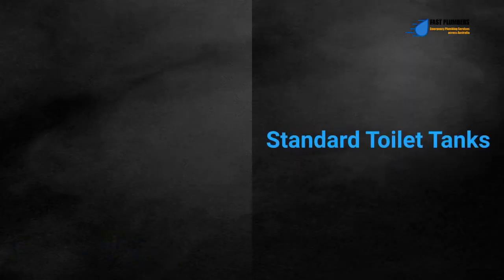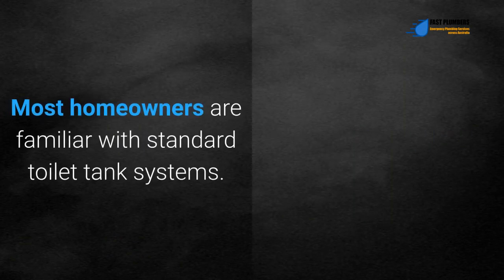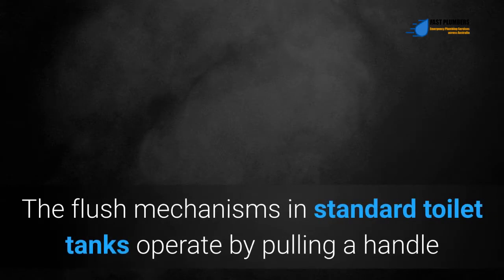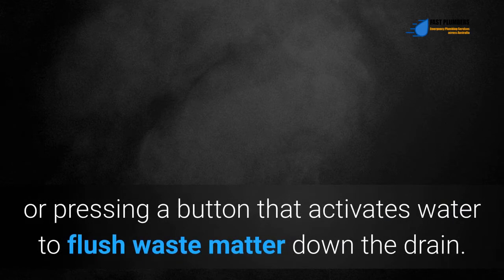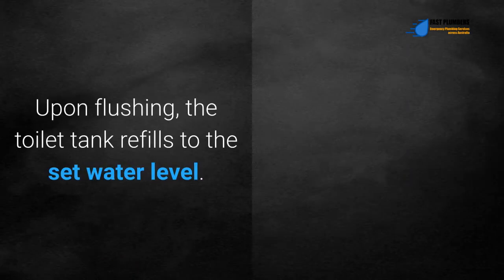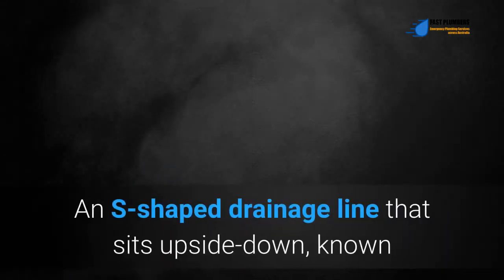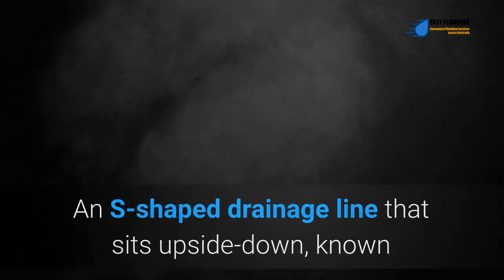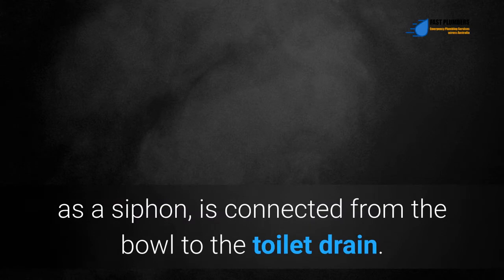Standard toilet tanks. Most homeowners are familiar with standard toilet tank systems. The flush mechanisms in standard toilet tanks operate by pulling a handle or pressing a button that activates water to flush waste matter down the drain. Upon flushing, the toilet tank refills to the set water level. An S-shaped drainage line that sits upside down, known as a siphon, is connected from the bowl to the toilet drain.